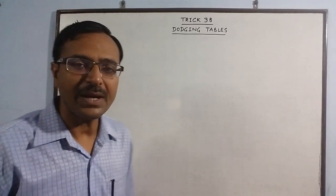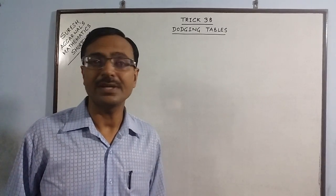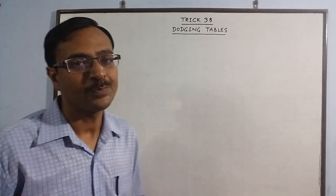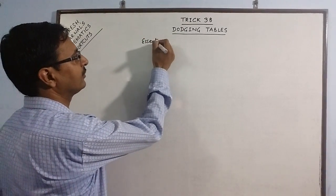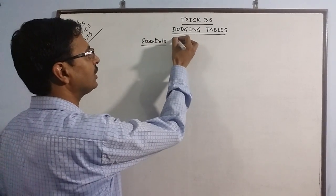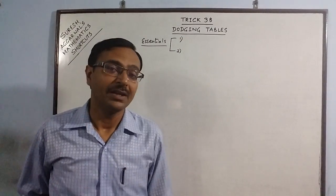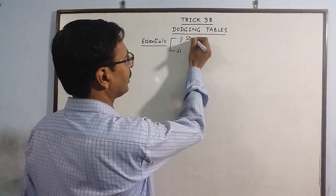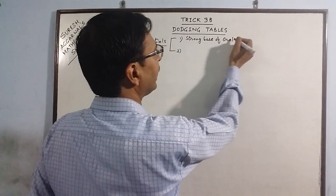There are some essentials which have to be taken care of before the child starts these dodging tables in class 3 onwards. I am going to tell you what are the essentials of dealing with this topic. There are basically two broad essentials which have to be taken care of. The very first one is to build a strong base of oral addition.